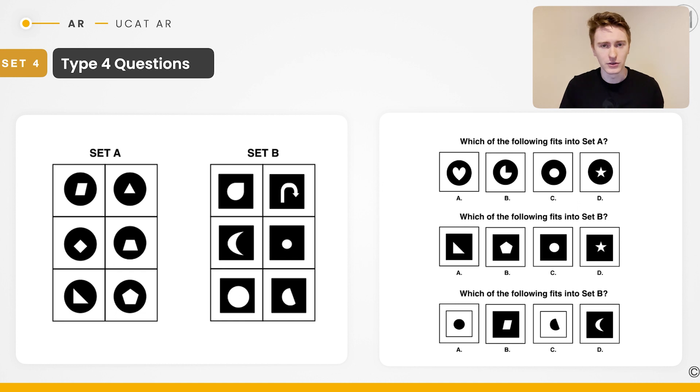In set A, we can see that the black shape, the bigger one, is a circle. Whereas in set B, the black shape is a square. If we look at the inner shape, we can see that in set A, they've all got straight edges. Whereas in set B, they've all got curved edges. These are the patterns at play.